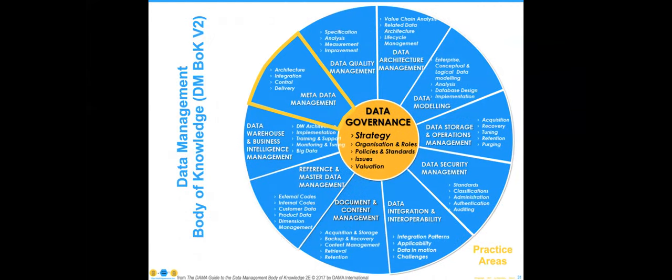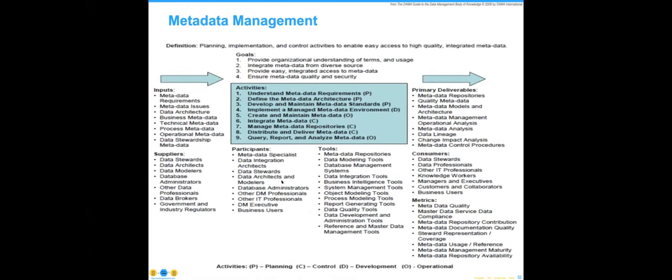Metadata is one of 11 practice areas that comprise the discipline of data management as spelled out in the DMBOK. Metadata management here is an input-output chart — a really nice piece to print out showing the inputs, processes, outputs, goals, activities, and participants involved. It's not something I'll read in full, but it covers everybody who's involved in metadata management.